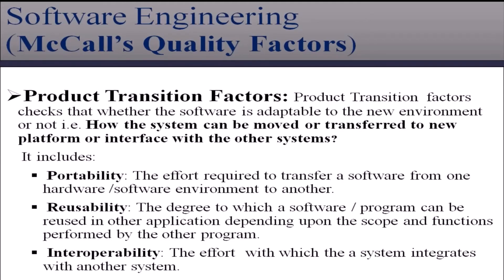Third is product transition factors. Product transition factors check whether the software is adaptable to a new environment or not, that is, how the system can be moved or transferred to a new system, new platform, or interface with other systems. It includes portability, reusability, and interoperability. Portability is the effort required to transfer the software from one hardware or software environment to another. Reusability is the degree to which the software or program can be reused in other applications depending upon the scope and functions performed by other programs. Interoperability is the effort with which the system integrates with another system.